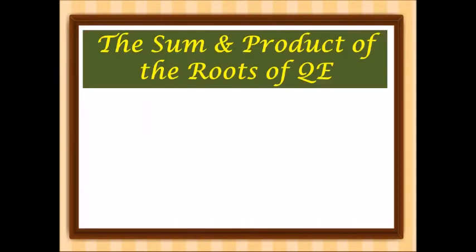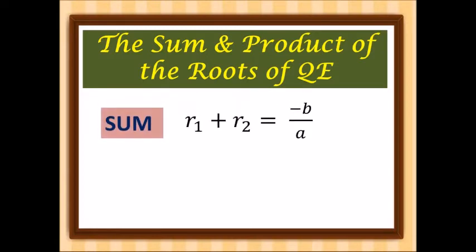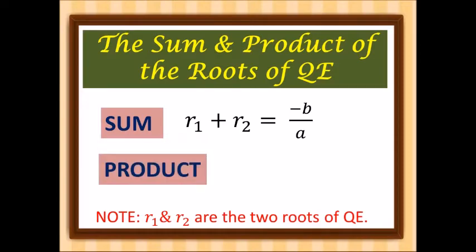Now let's find the sum and product of the roots of our quadratic equation. The formula for the sum is negative b over a, where r sub 1 and r sub 2 are the roots of our quadratic equation. The formula for the product is c over a.